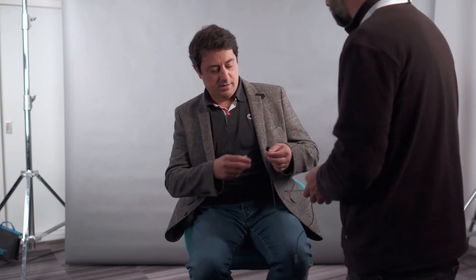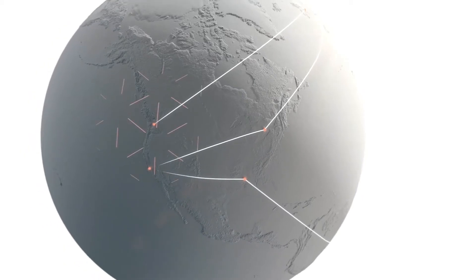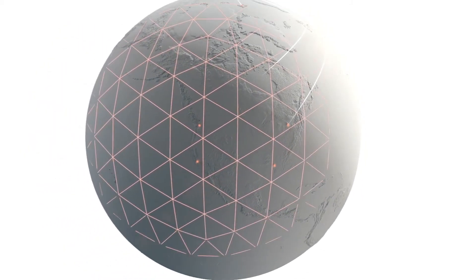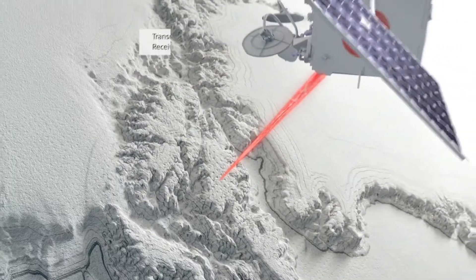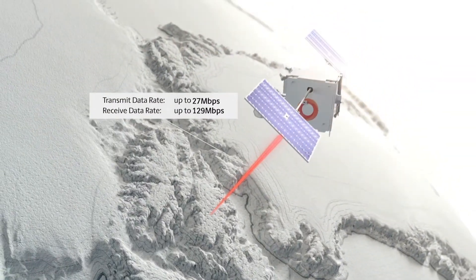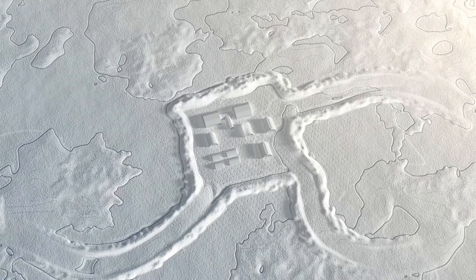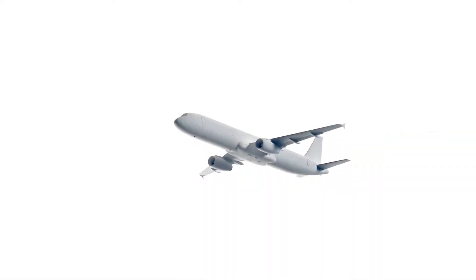OneWeb is a global telecommunication company. We operate a fleet of 700 satellites all around the globe. We provide internet service for verticals such as maritime, aviation, government, and military.